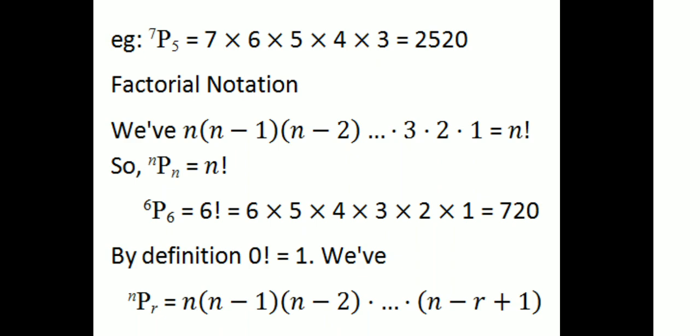This is factorial notation. n factorial is 1 into 2 into 3 into ... into n. So nPn = n factorial. For example, 6P6 = 6 factorial = 6 into 5 into 4 into 3 into 2 into 1, which equals 720.